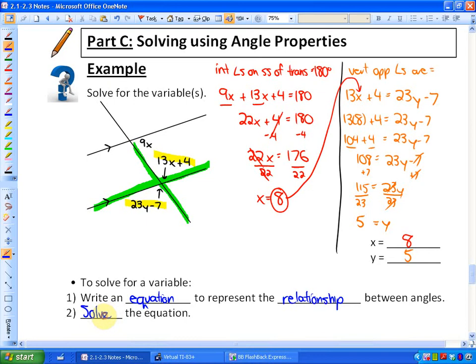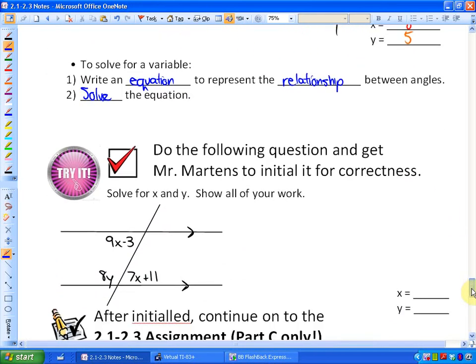You always start by solving the equation that you can solve. You cannot solve an equation with two variables unless you know what one of the variables already is. So what you're going to do is try a couple on your own and let me know how it goes.